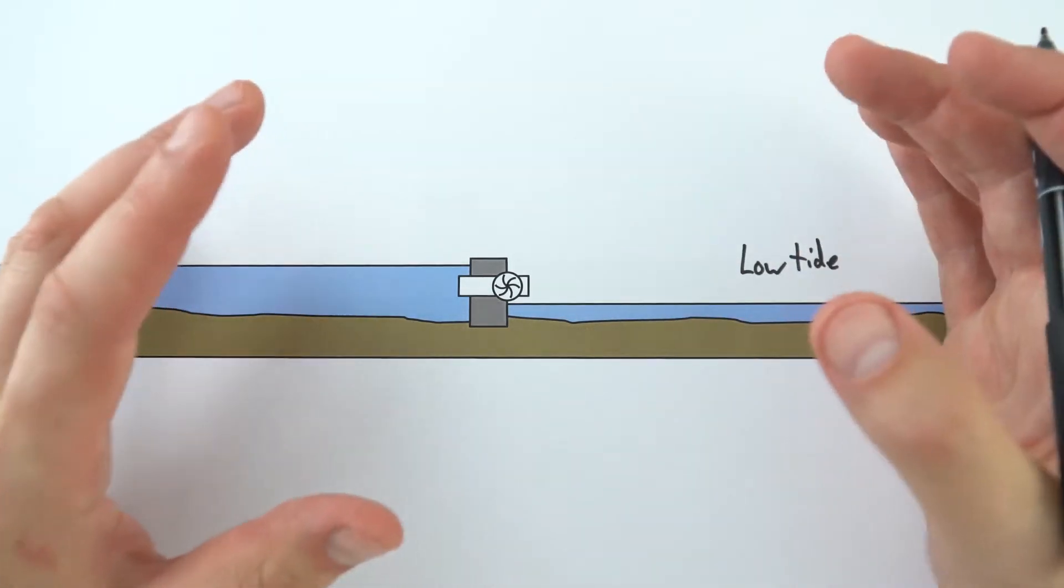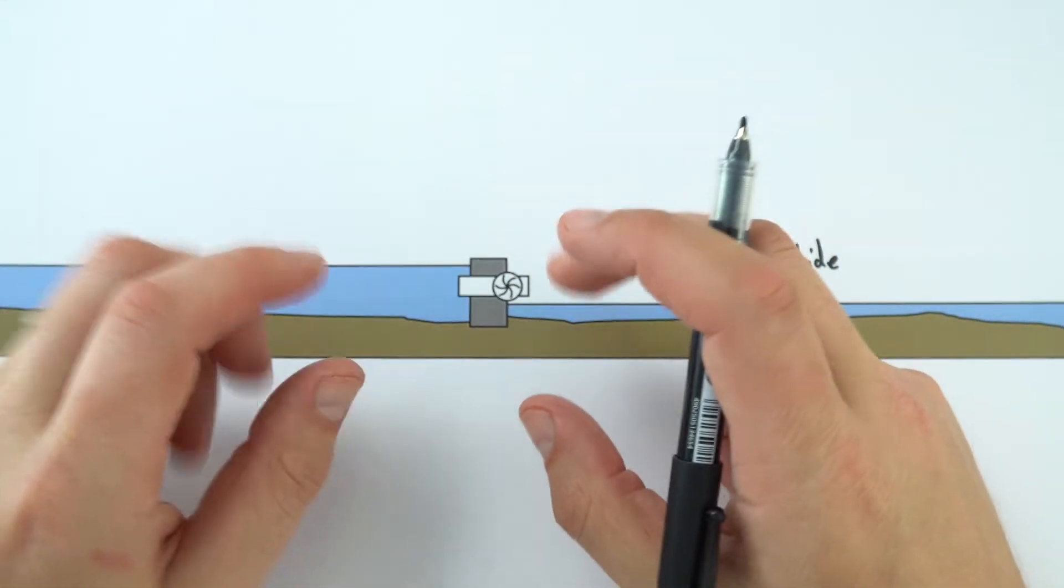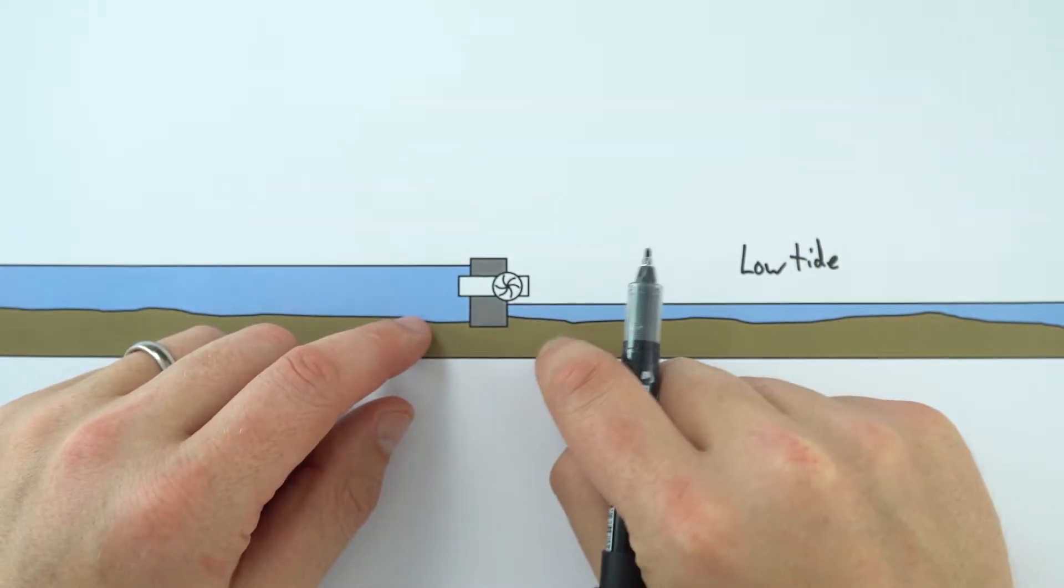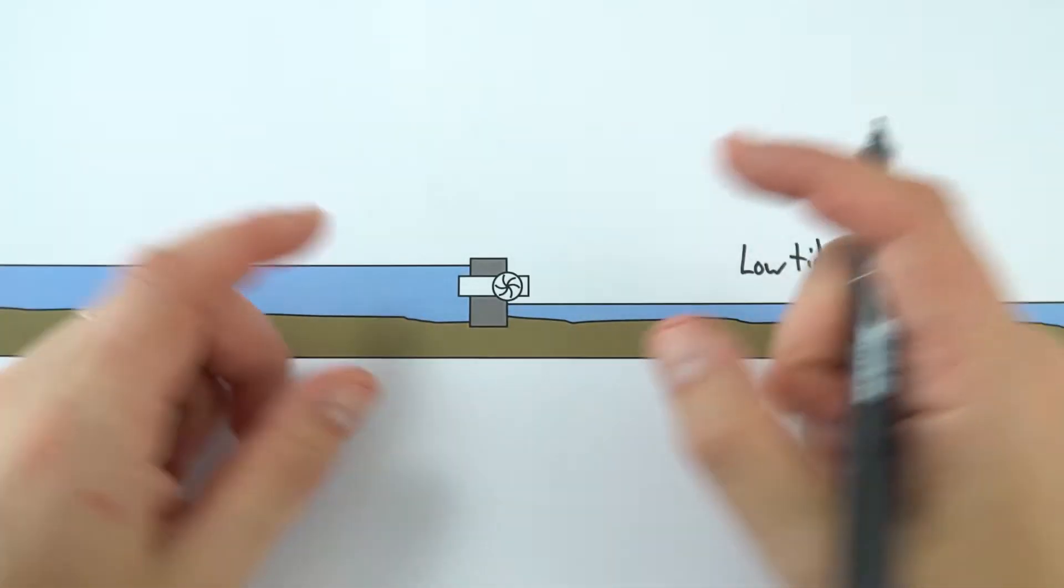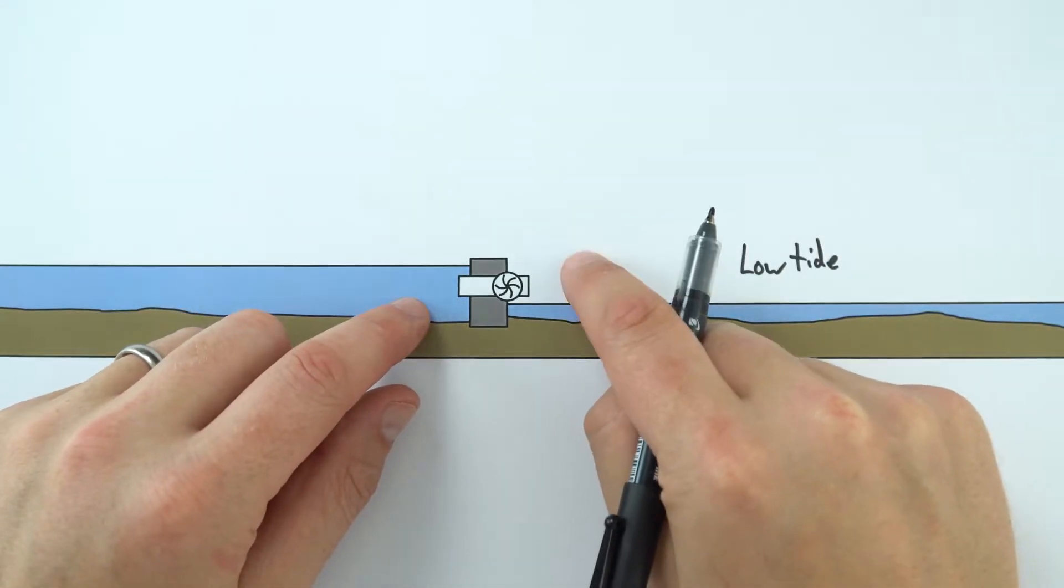There are some downsides just like there are downsides with hydroelectricity. First of all, this can only work in certain locations, so you've obviously got to be by the seaside and also it's got to have the right kind of tidal estuary where you've got a big range of tides to actually make this worth building.